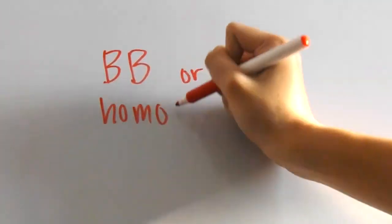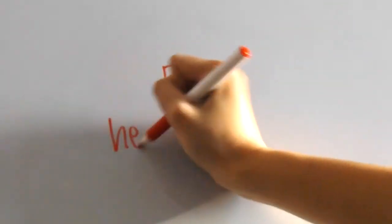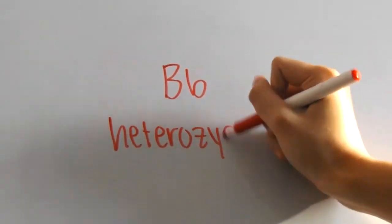Well, if you get two of the same alleles, that means you're homozygous for it. If you get two different alleles, such as one brown and one blue, that means you're heterozygous.